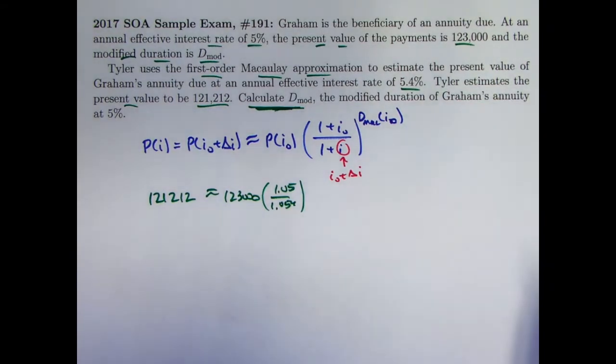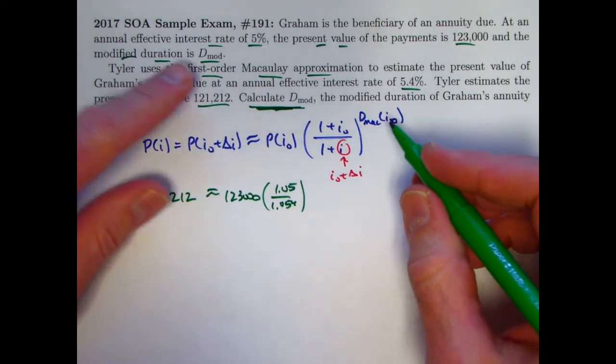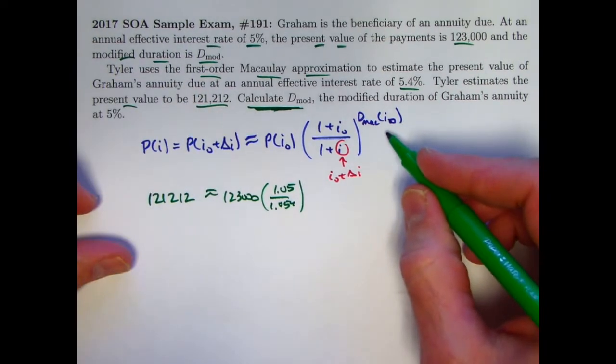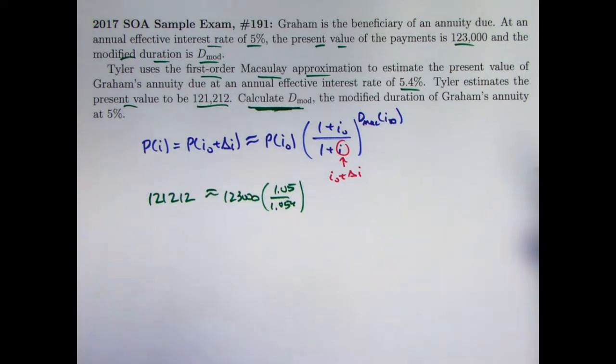And then, here's where I made my mistake. Maybe you could guess the mistake that I made. I said, okay, I want the modified duration. I know this equation involves the Macaulay duration. I just need to put the modified duration in here and divide by 1 plus i0, 1.05. That's the wrong thing to do. Okay, I was getting mixed up in just thinking about this too quickly.